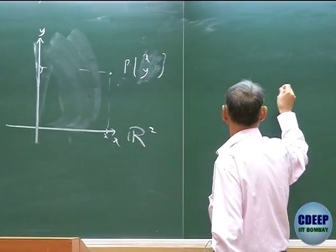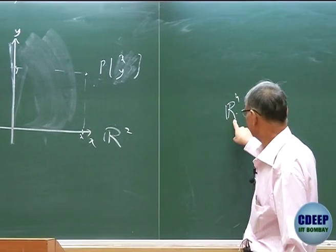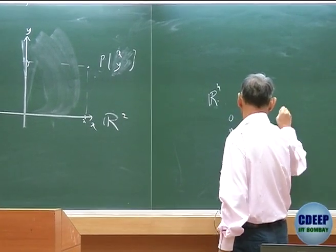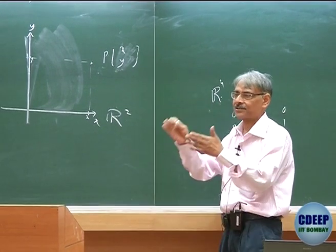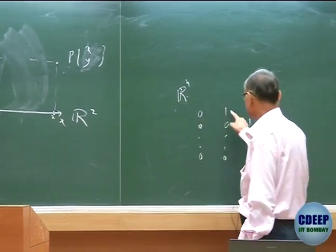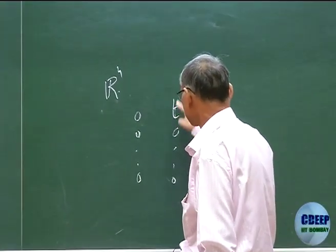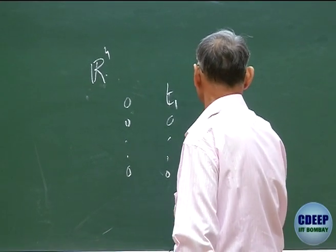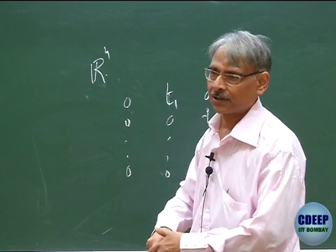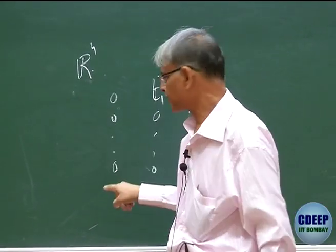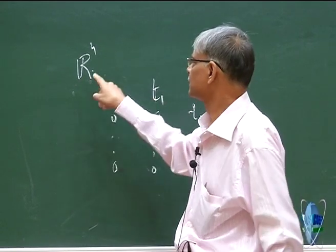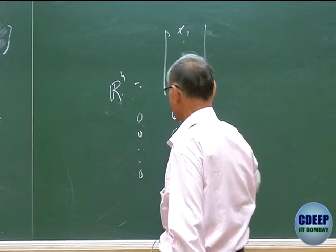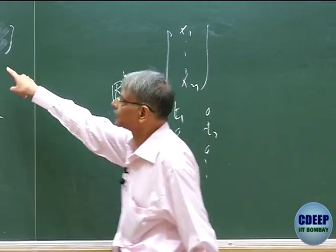Similarly for Rn: any point in Rn already has a 0,0,...,0 origin, a 1,0,...,0 point, a 0,1,...,0 point, and so on — these are all elements of Rn. When we write Rn, axes are already drawn, there is an origin, and each point in Rn gets coordinates. In fact by definition, each point comes with coordinates relative to this origin and these axes — these are geometric points in Rn.